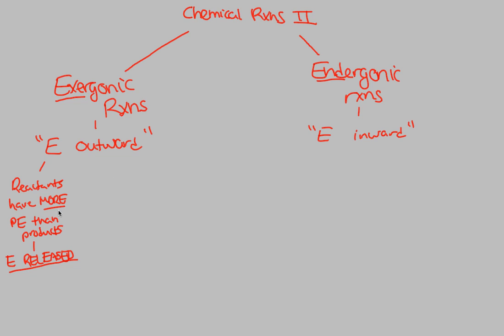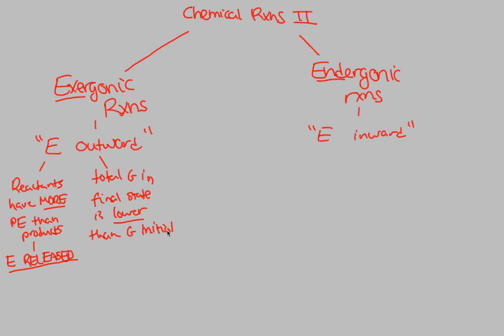Now that we've established that reactants have more potential energy than products, this causes energy to be released. We can talk about this in terms of delta G. In this situation of energy going outward, the total G in the final state — remember G stands for free energy — is lower than G initial. Once the reaction has completed, we notice that the final free energy is lower than the initial.